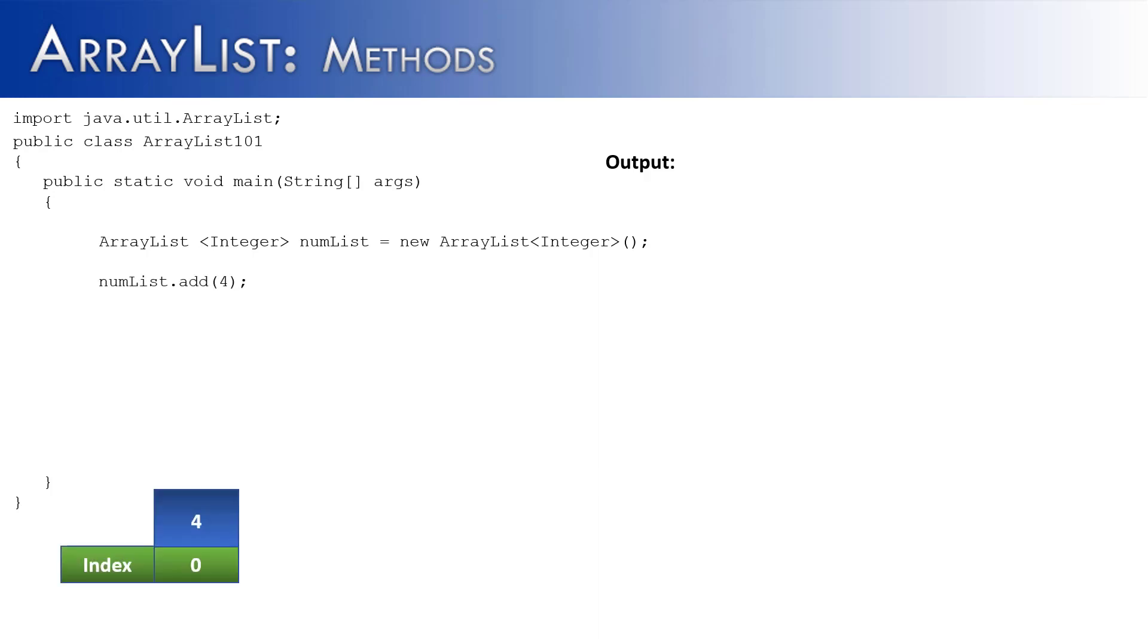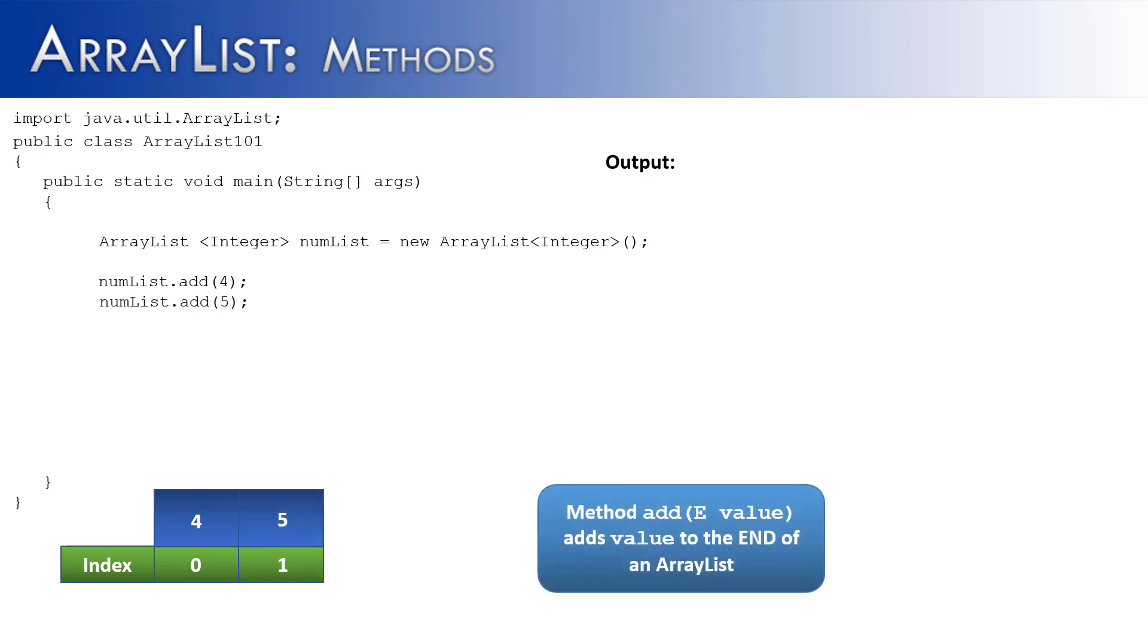The first method that I want to look at is called add. And what it does is it adds elements to an ArrayList. It adds them to the end of the ArrayList, so you'll see that 4 was added first, the end is actually the beginning, 5 is then added and it's added to the end, which is the first index or the 1 index.